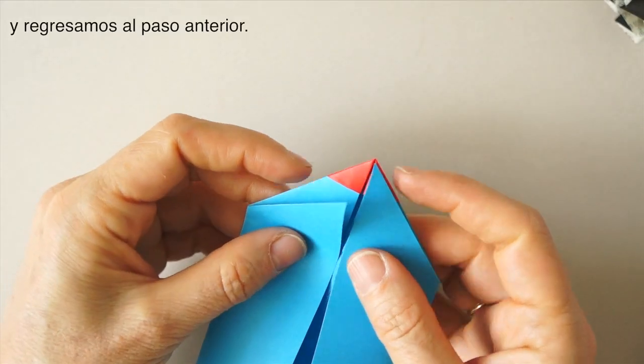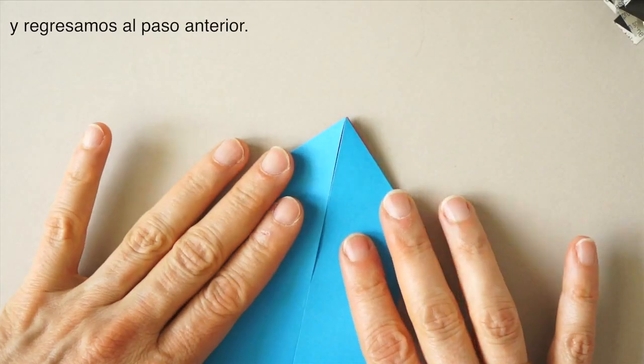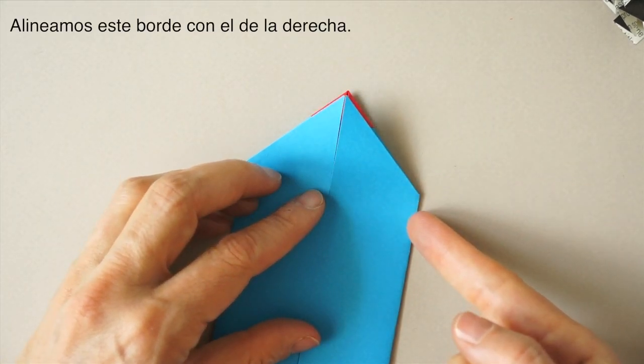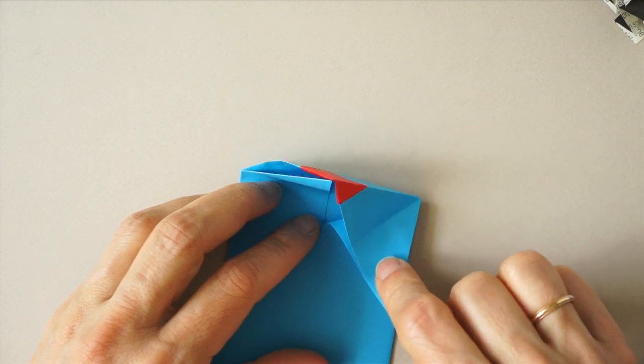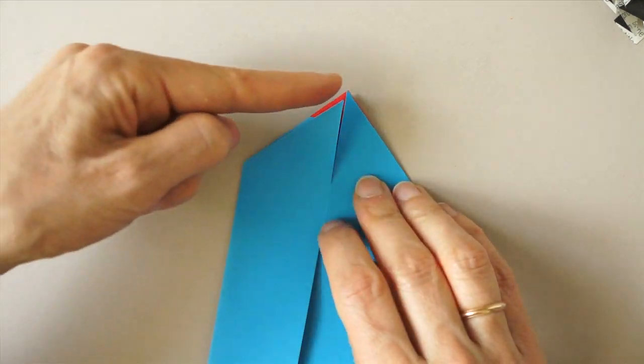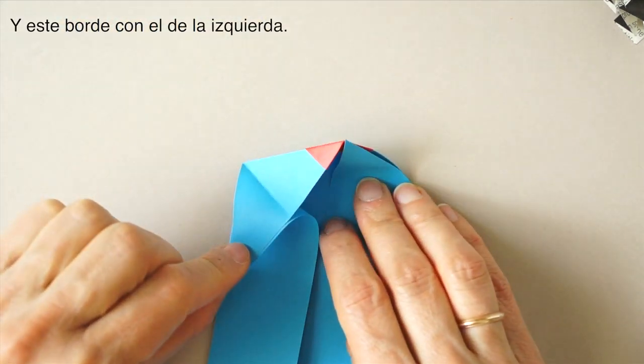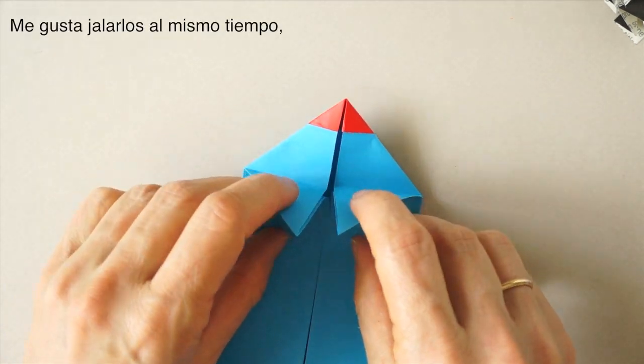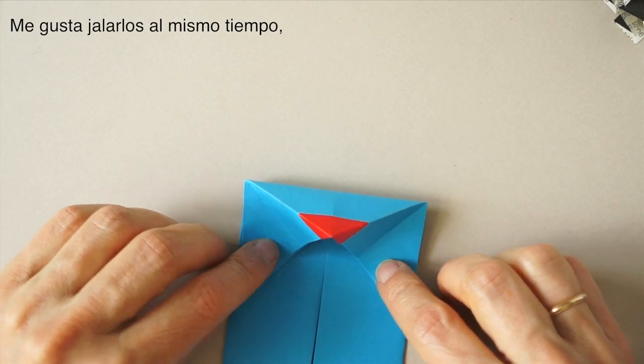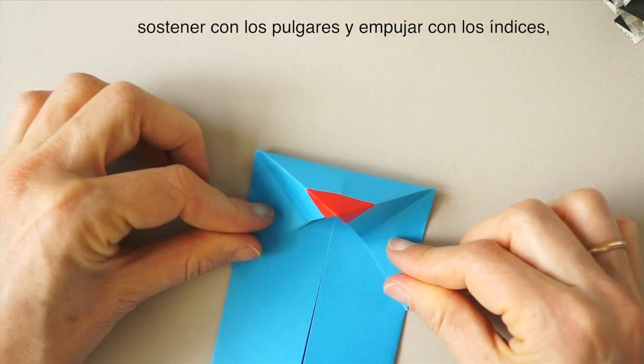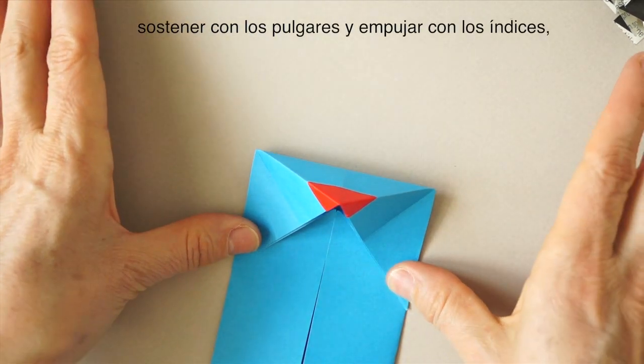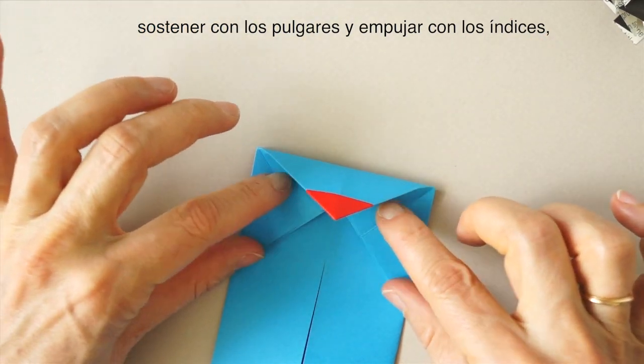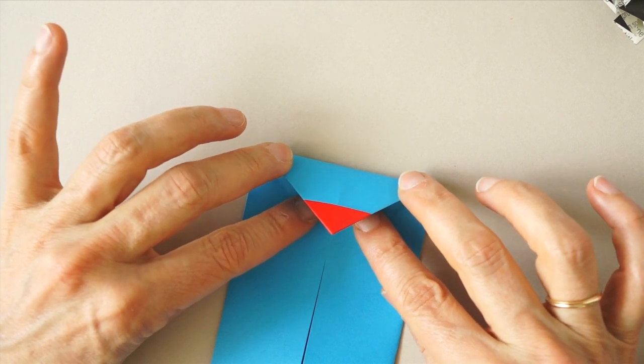Then we go back to the previous step. Now we are going to align with this edge here and this edge here. I like to pull them both at the same time.